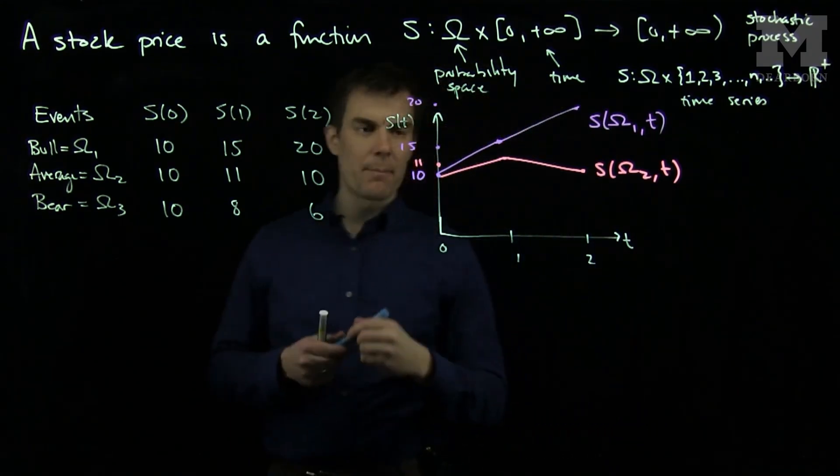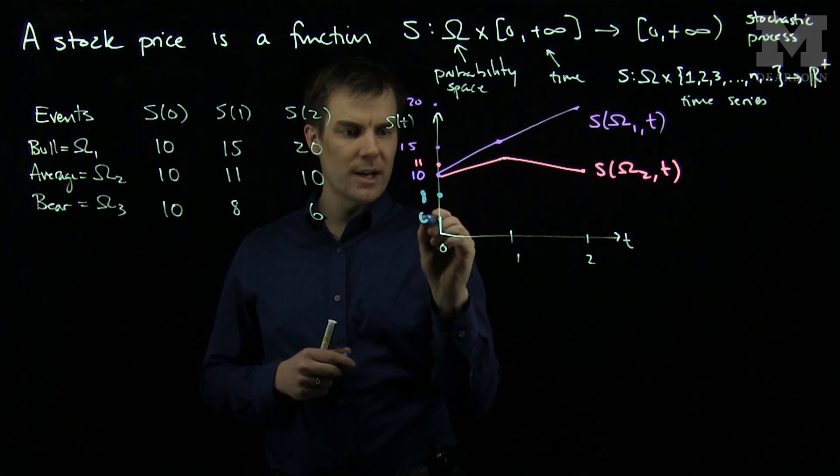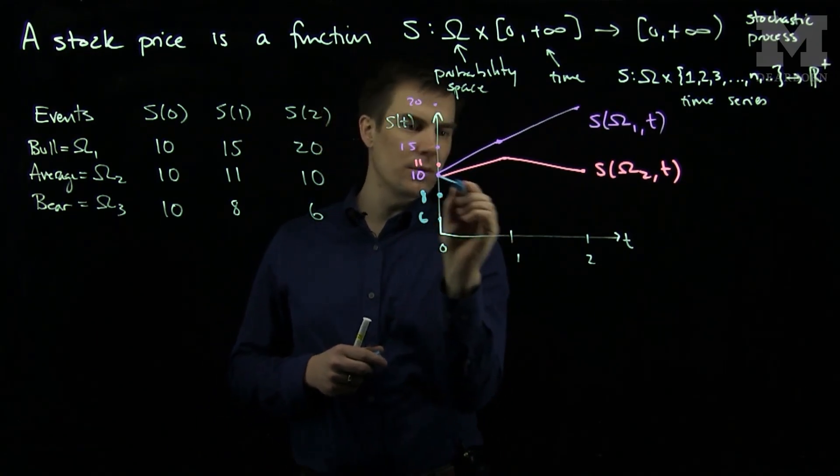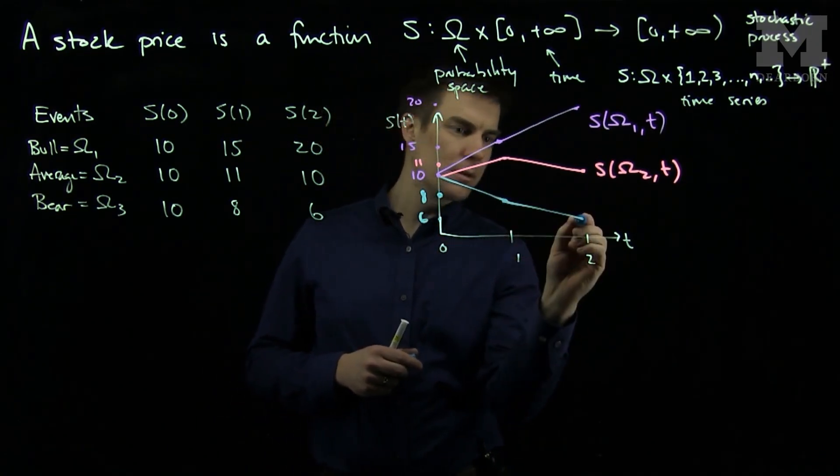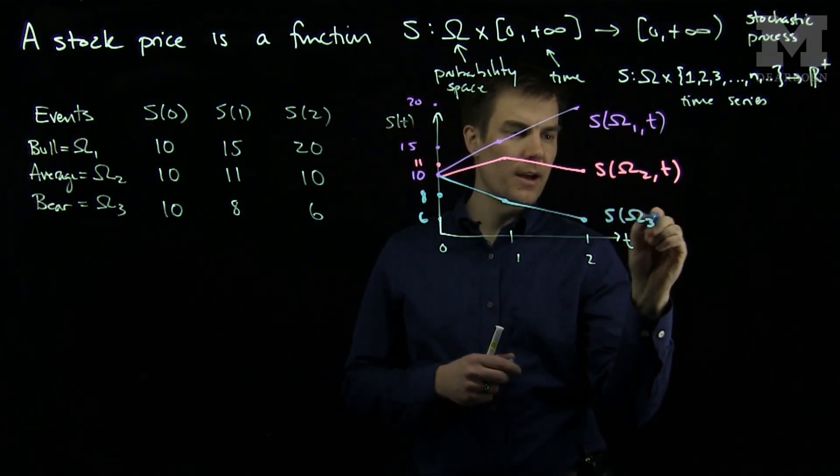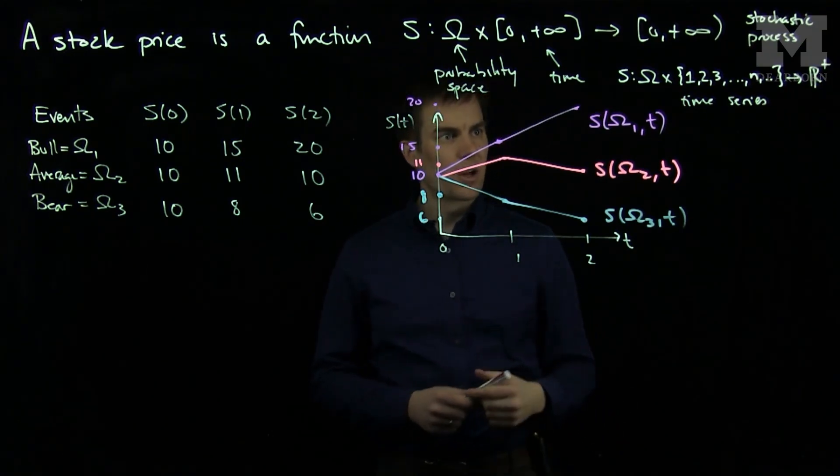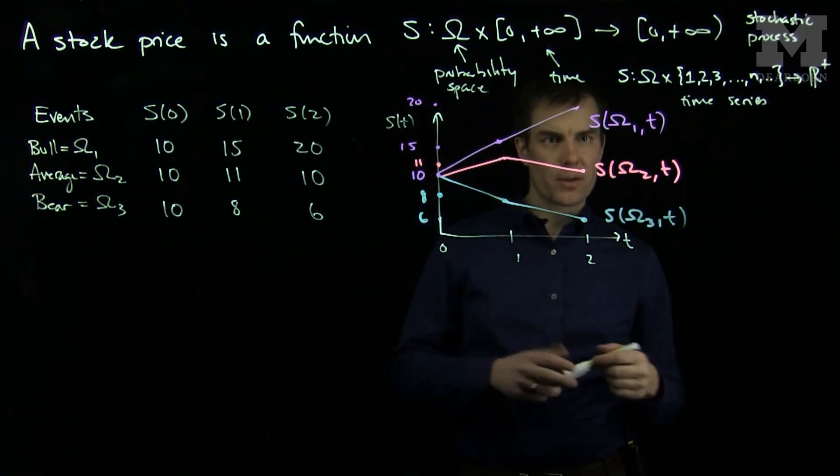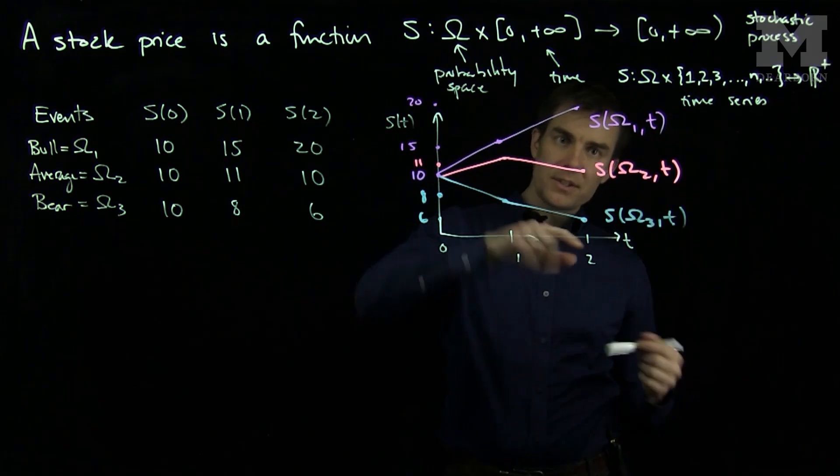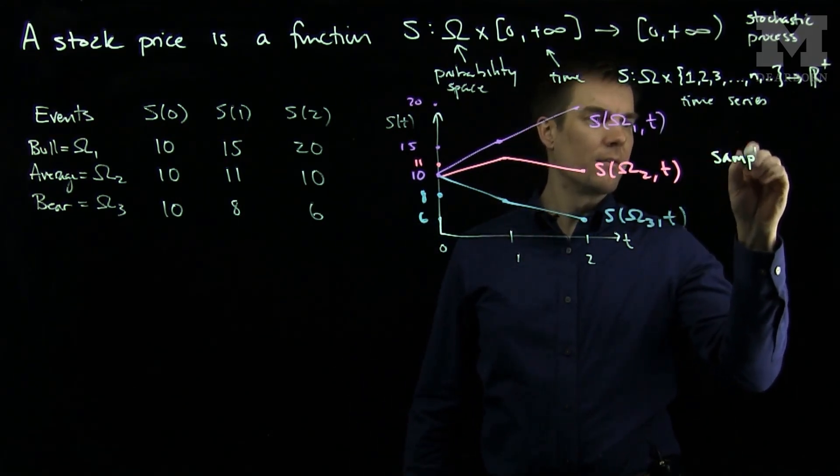And finally, I will have my bear path. It will go down to eight and then go down to six. So my bear path will do this and then go down over here to six at time two. And this is my S of omega three t. So each of these values, S omega one of t, S omega two of t, S omega three of t are curves in the S of t plane. And they are referred to as the sample paths of the stock price.